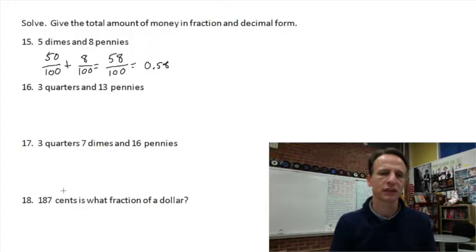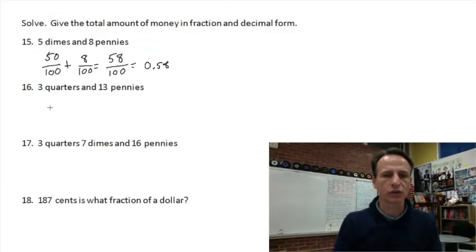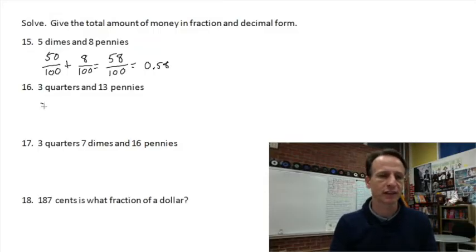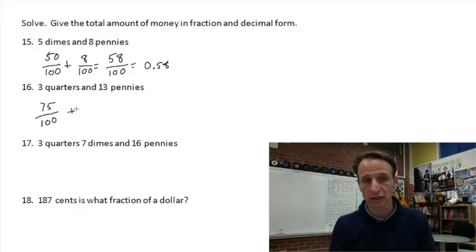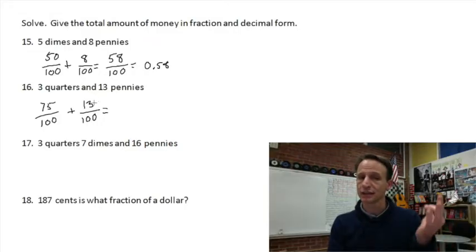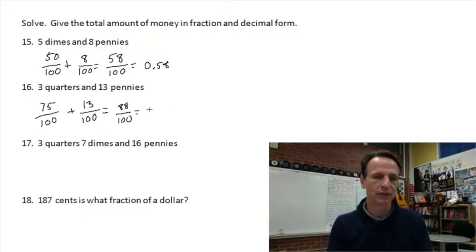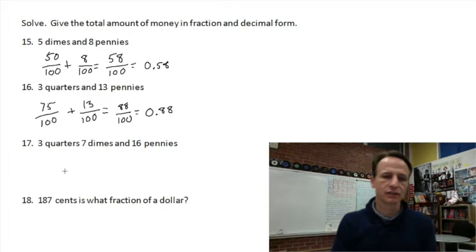Three quarters is 75 cents = 75/100. Then we have 13 pennies = 13 cents = 13/100. Add them together: 75 + 10 = 85, 85 + 3 = 88. So it's 88 cents = 88/100, which we write as the decimal 0.88.